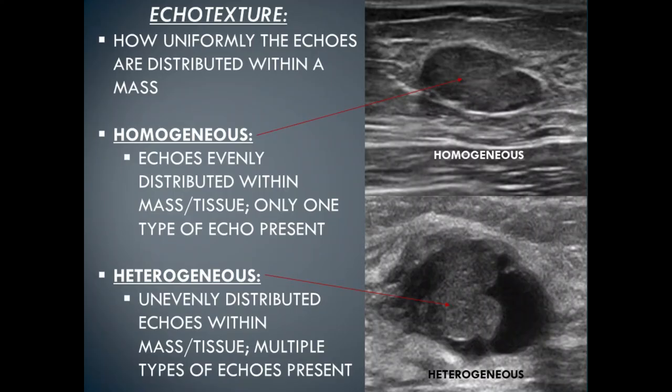Echo texture shows how uniform things are on ultrasound. This mass has echoes that are pretty uniform — pretty much the same color throughout. All masses will never be 100% uniform, but when at least 90% of the mass is the same color, we call that homogeneous. This other mass, by contrast, has multiple different types of brightness levels — we call that heterogeneous.